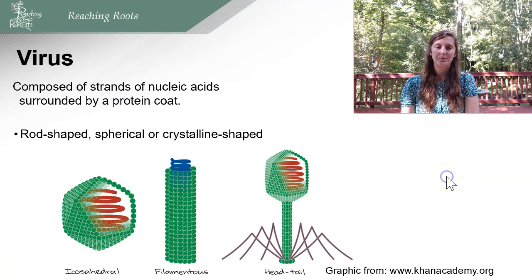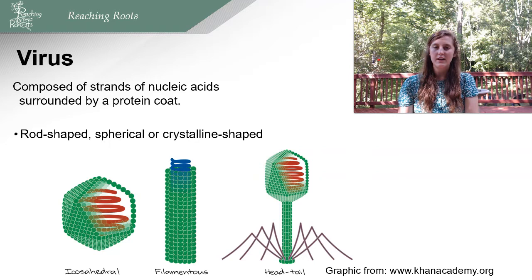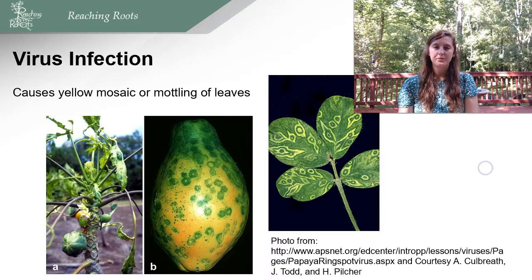Next we'll talk about viruses. Viruses are microorganisms we can't see with our eyes — we need an electron microscope. Unlike bacteria and fungi, viruses are not able to reproduce unless they have a host. Viruses are composed of strands of nucleic acid surrounded by a protein coat. They can be rod-shaped, spherical, or crystalline — many different shapes. They need a host to reproduce and cannot reproduce on their own.